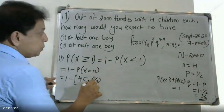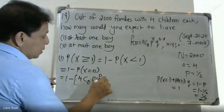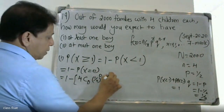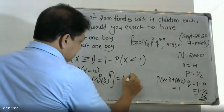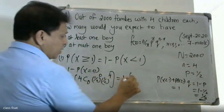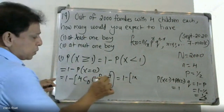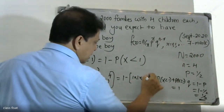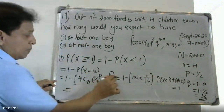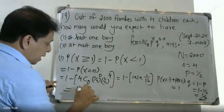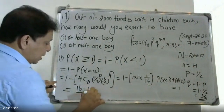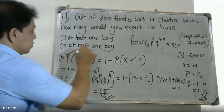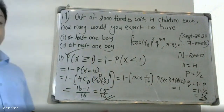That is 1 minus (1/2)^4, which equals 1 minus 1/16. That gives us 16 minus 1 divided by 16, which is 15/16. That is the answer to the first question: 15 by 16.